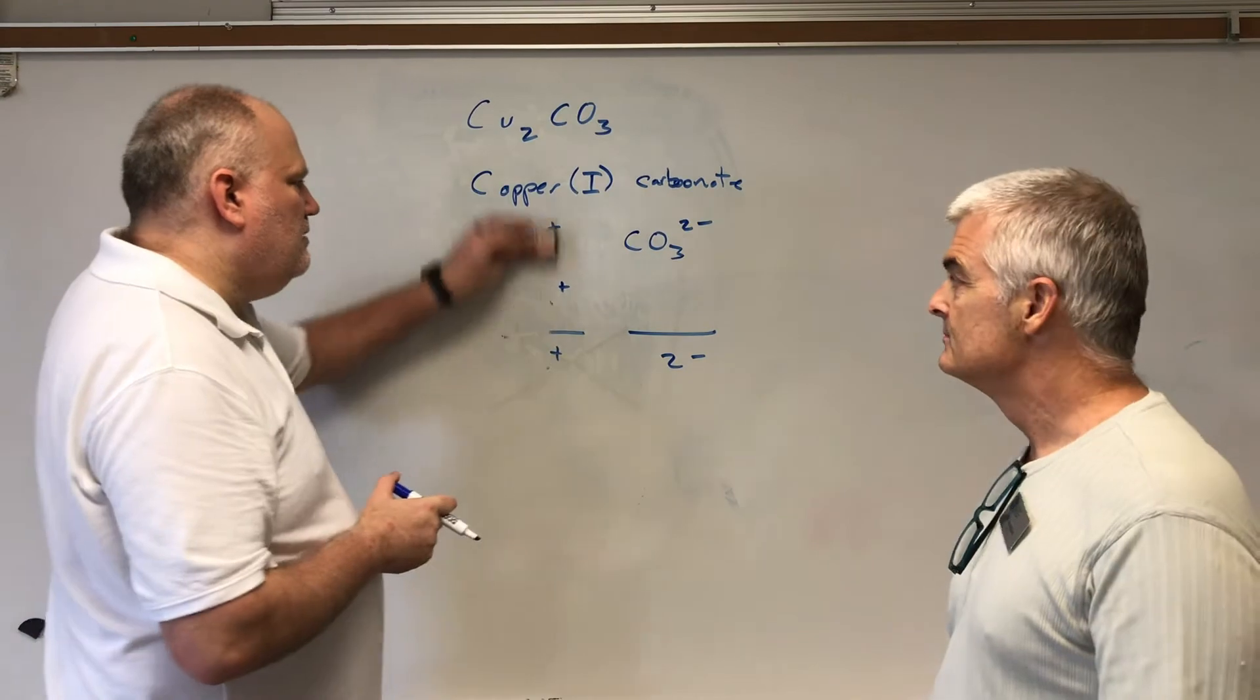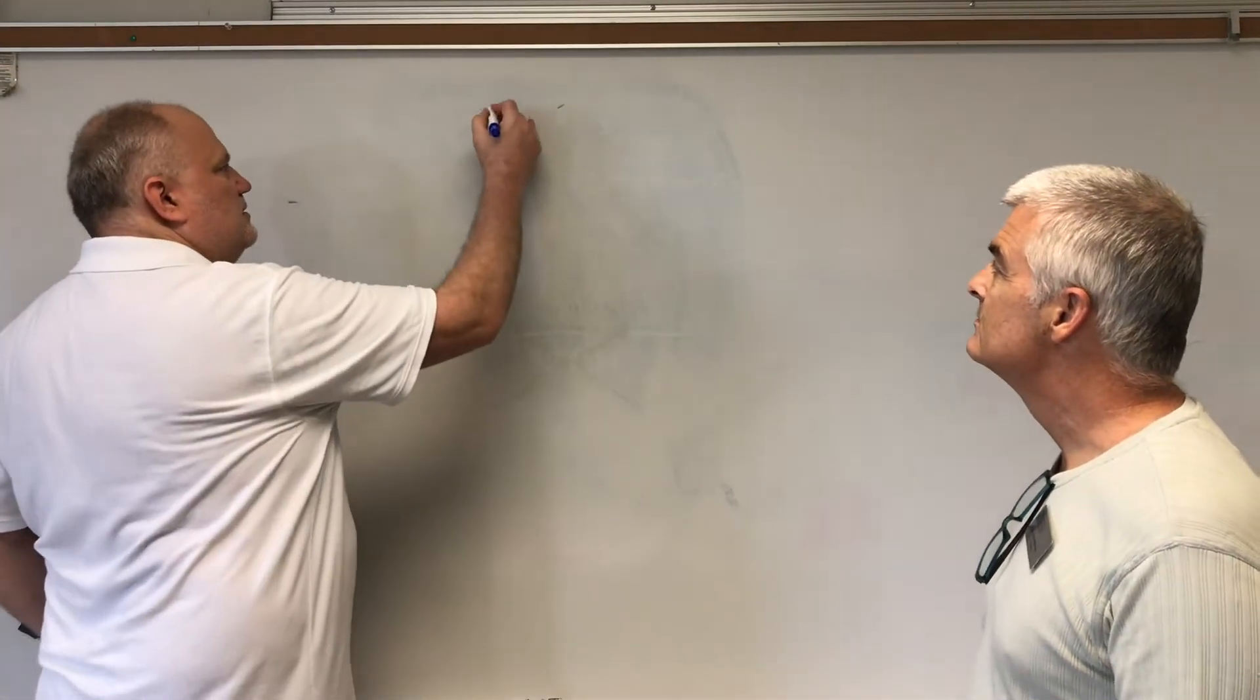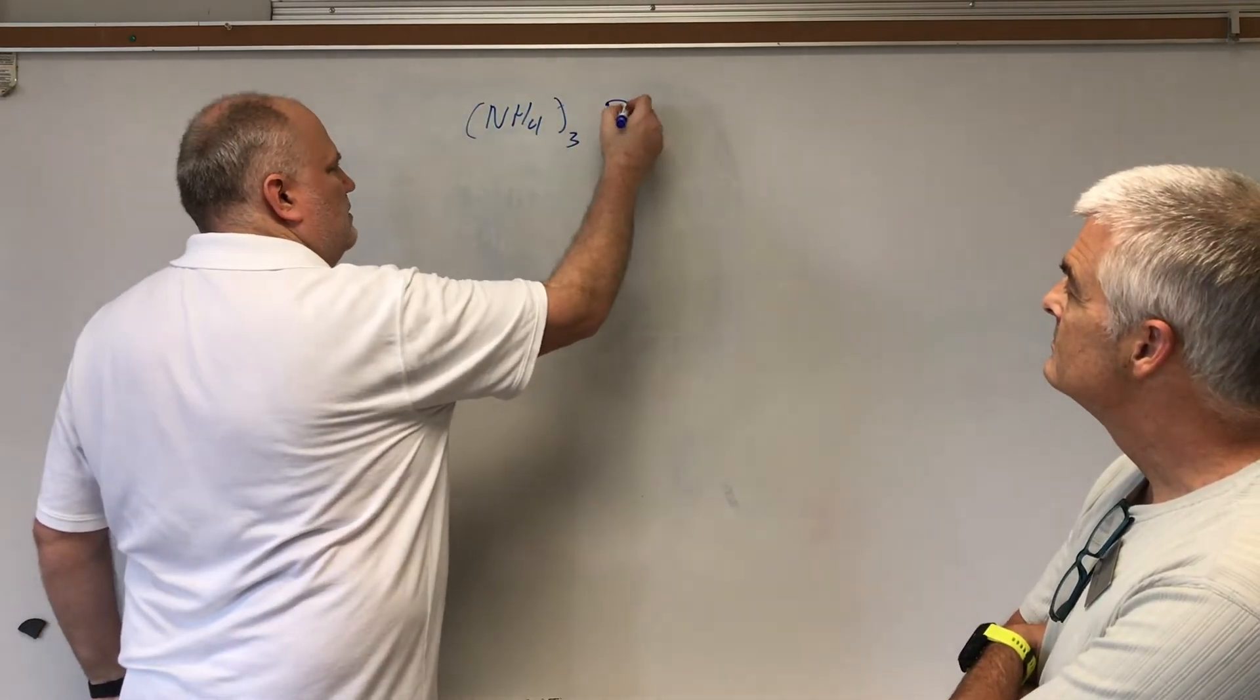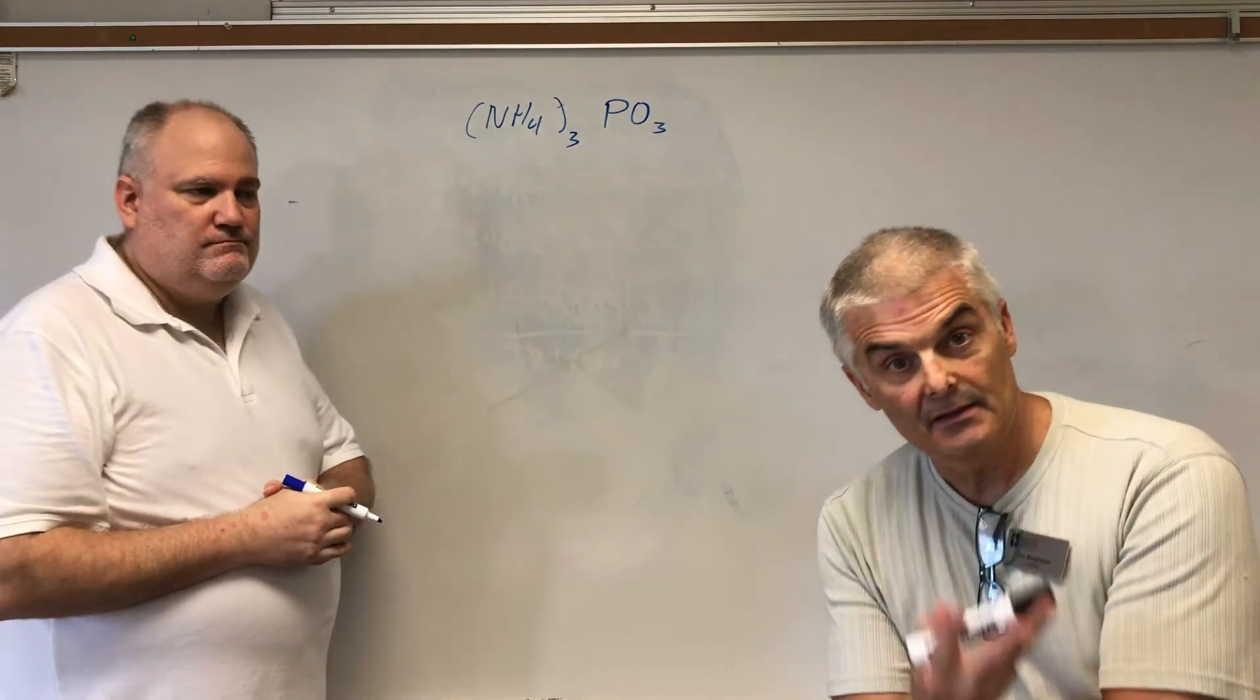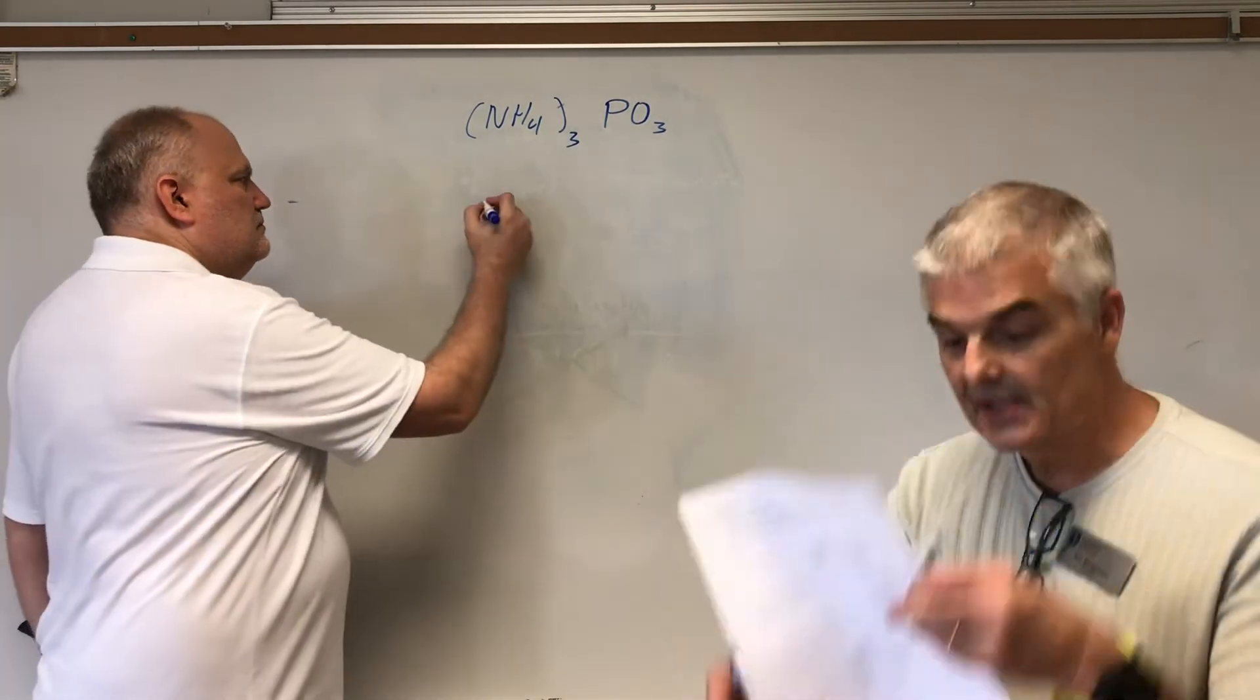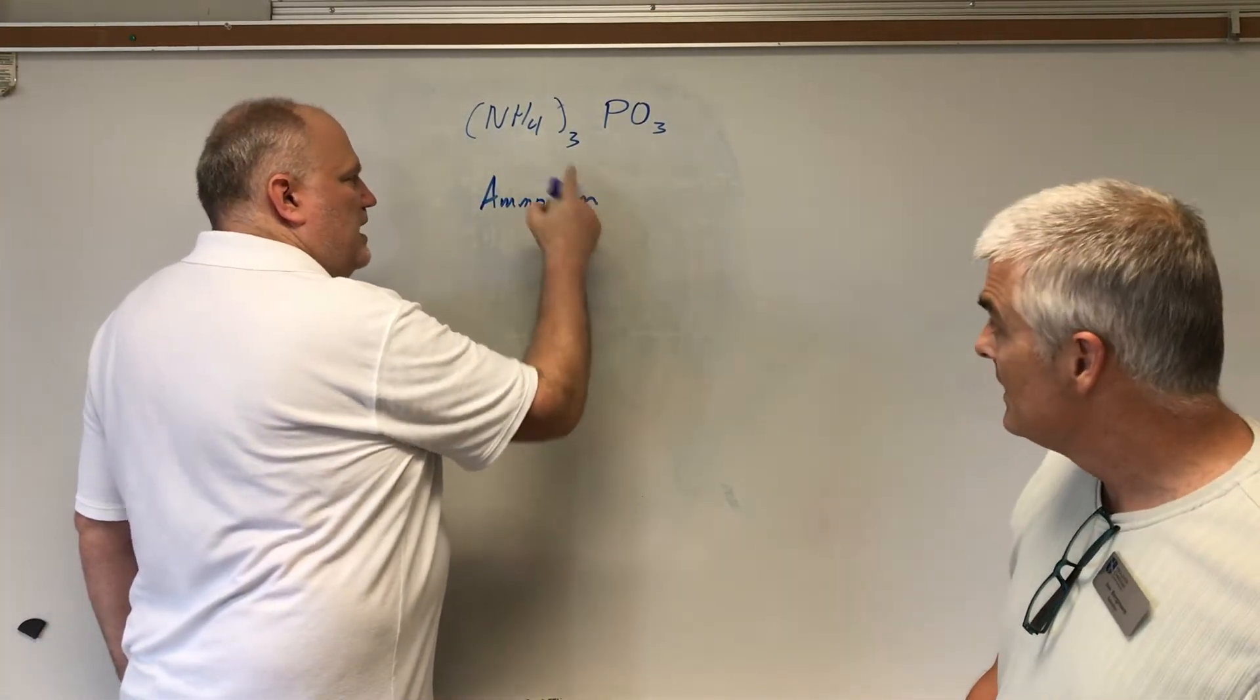Let's do one that we've seen before but we're going to do it a little bit different. Let's do (NH4)3PO3. We'll name the cation first. NH4 is one of those polyatomic ions - it's the only poly that has a plus one charge. So that's named ammonium. Some people get a little freaked out by that three. Is it a transition metal? No, because it's a polyatomic ion.